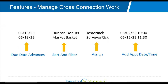This is an example of how the backflow software manages the program and data. Every time you do a test, the due date advances automatically per your state's rules. In Massachusetts, double checks go out a year, seasonal RPs go out a year, and non-seasonal RPs go out six months. You can sort and filter all the different work, assign it to surveyors and testers loaded into the software, and add appointment dates and times so testers know when to do them.